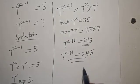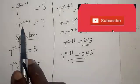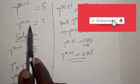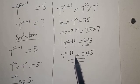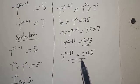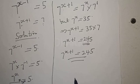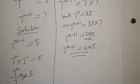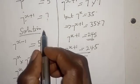Therefore 7 raised to power x plus 1 is equal to 245. So that is the answer. We can see from the question we did not know 7 raised to power x plus 1, and here we found it is equal to 245. Let's use the other method to solve it and confirm the answer.